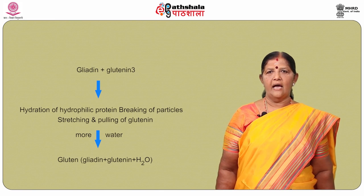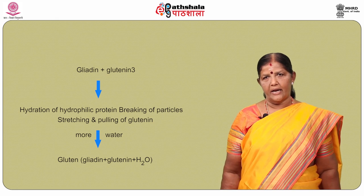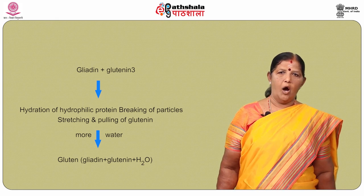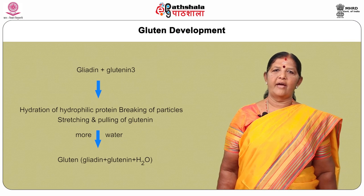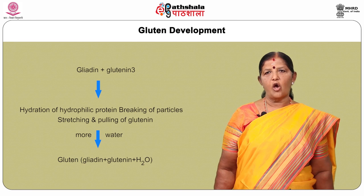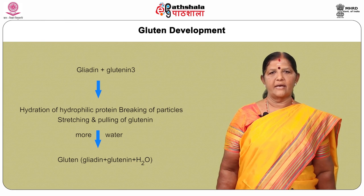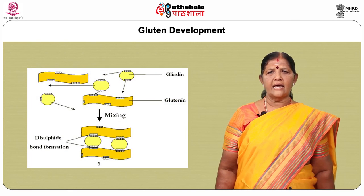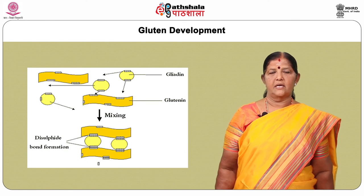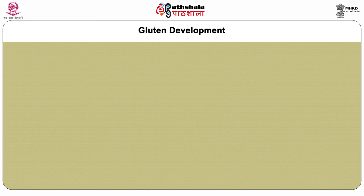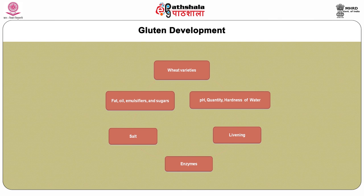Gluten is a critical functional protein component in wheat based dough. Gluten is formed when two classes of wheat insoluble proteins in flour — glutenin and gliadin — are hydrated with water and mixed. When mechanical shear is applied, it helps in the formation of gluten bonds, which is a tough rubbery substance that becomes a viscoelastic matrix holding the starch granules in the flour.